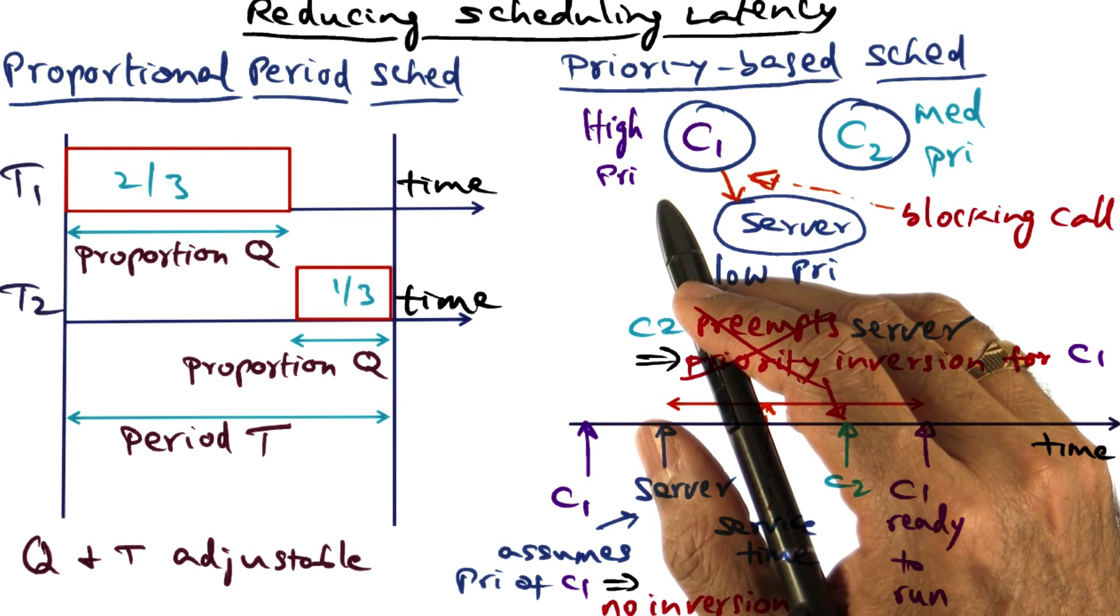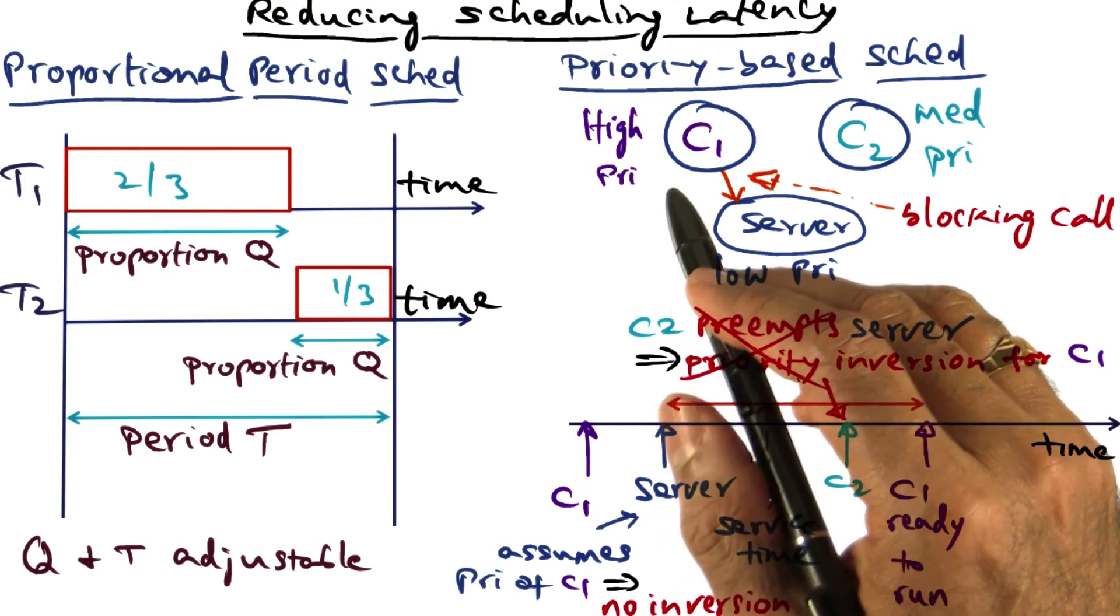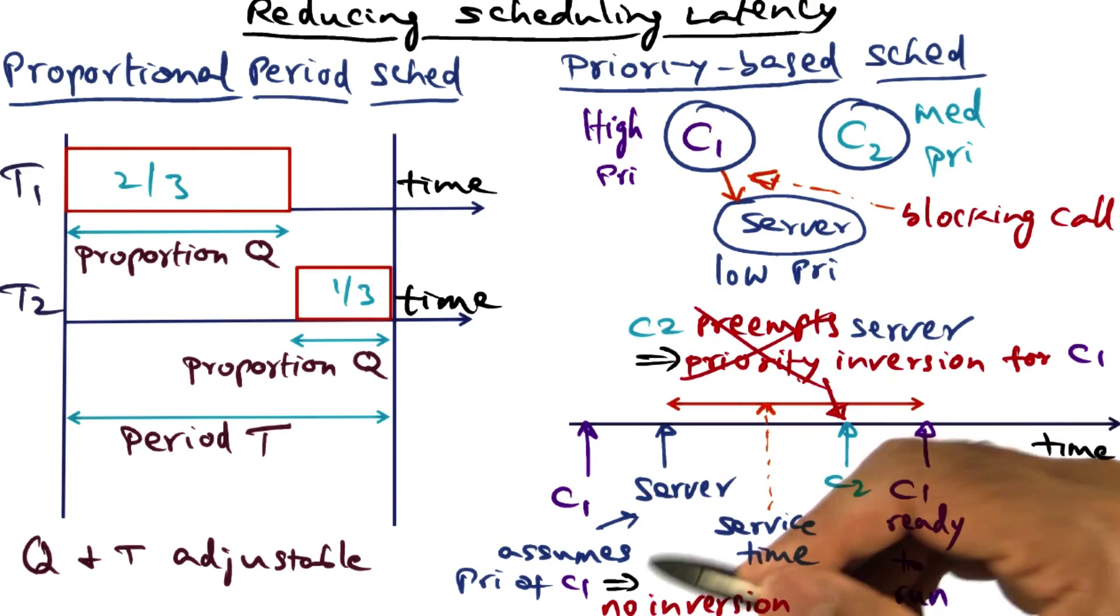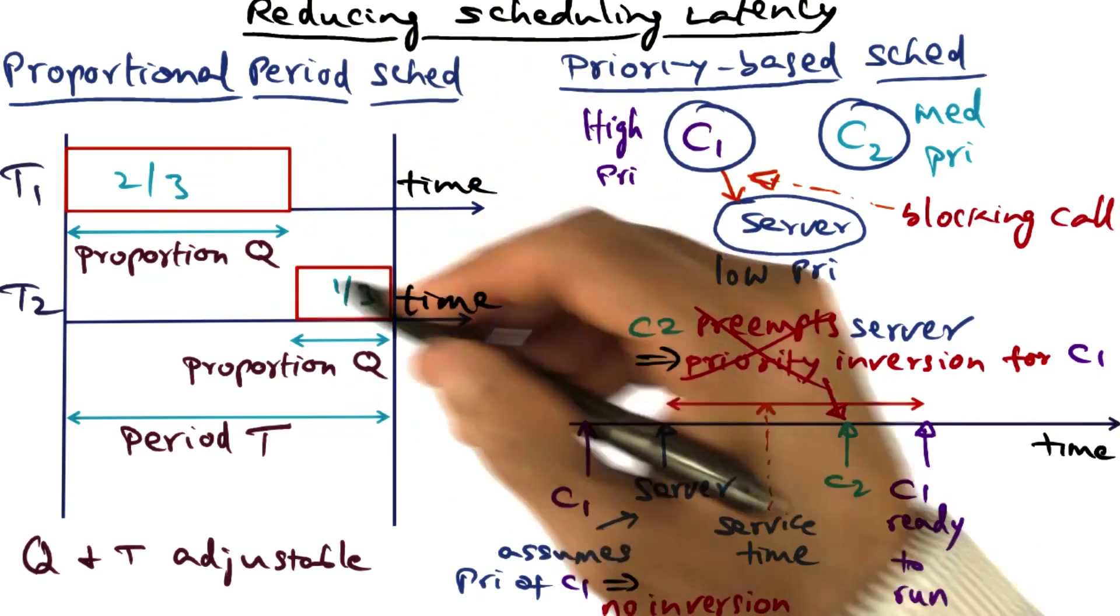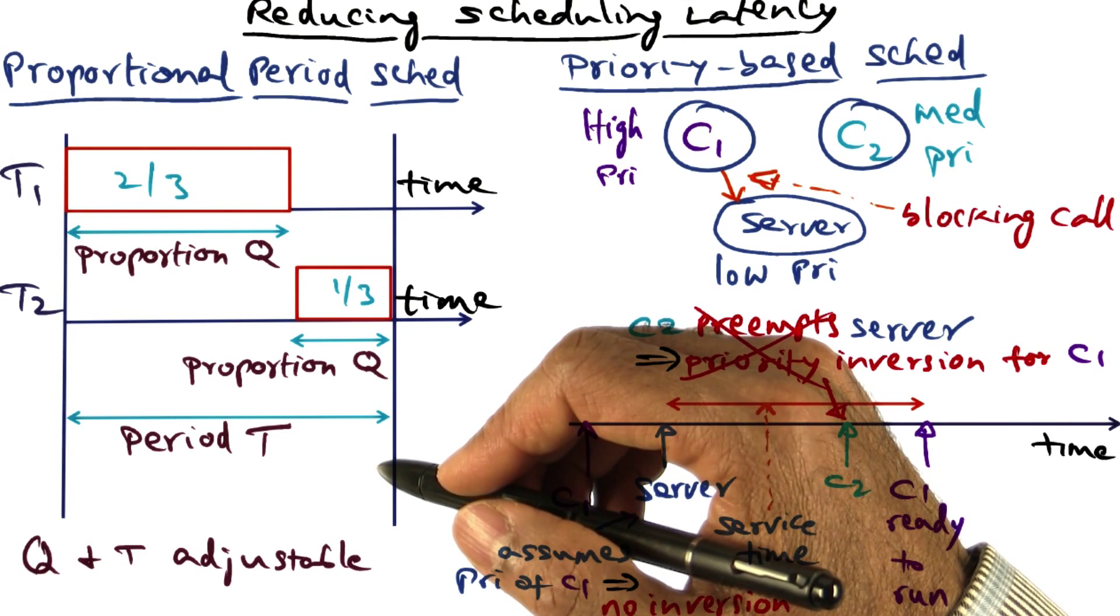Second, using a preemptible kernel to reduce the kernel preemption latency. And third, using priority-based scheduling to avoid priority inversion and guaranteeing a portion of the CPU time to be allowed for time-sensitive tasks.